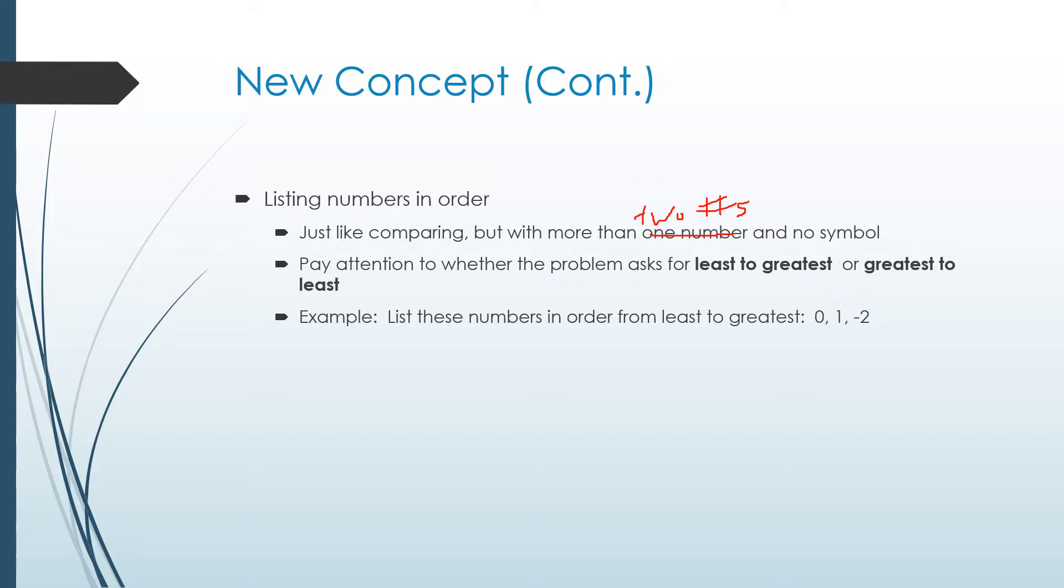So for example, we were going to list zero, one, and negative two in order from least to greatest. We need to figure out what's the smallest number. Well, there's only one negative, so we know that that is the smallest number. So negative two would be first. Zero is always smaller than positive numbers, so that would be our middle number. So our answer would be negative two, zero, and one.